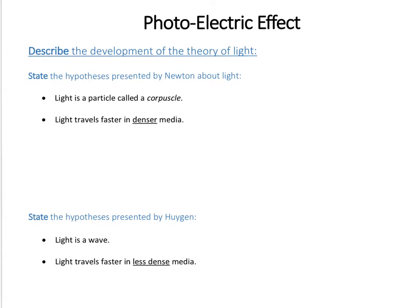Newton also went on to say that he believed light travels faster in a denser medium. The reason he made that hypothesis was to explain the refraction experiment. So if we have a glass block here with a refractive index greater than 1, what you'd expect to see if you have light coming in is that it will bend towards the normal. He explained this by saying the light wave is speeding up, and that's what's causing it to bend - there's a sort of gravitational attraction from the object which accelerates the wave.